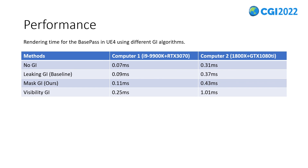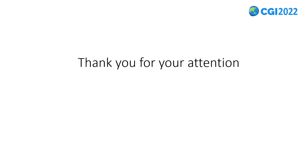Finally, regarding performance: this table shows the rendering time comparison between the original leaking GI, visibility GI, and our approach. Visibility GI well addresses light leaking for any objects and dynamic lights, but it doubles the rendering time for the GI pass, which is not acceptable for mobile devices. Our approach addresses light leaking with only about 20% extra rendering time compared to the original leaking GI, which we consider acceptable for most cases. Thank you for your attention.